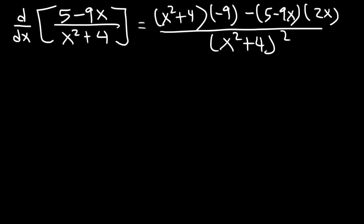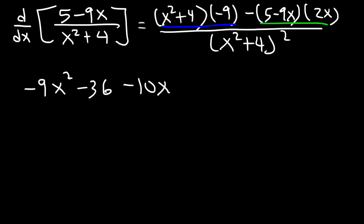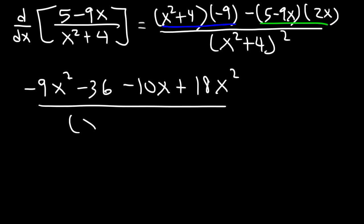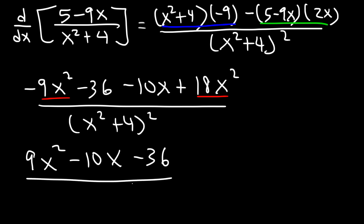Applying the quotient rule: g times f prime is x squared plus 4 times negative 9, minus f times g prime which is 5 minus 9x times 2x, all over x squared plus 4 squared. Distributing: negative 9 times x squared plus 4 gives negative 9x squared minus 36. Then negative 10x plus positive 18x squared. Combining like terms: negative 9x squared plus 18x squared is 9x squared, giving a final answer of 9x squared minus 10x minus 36 over x squared plus 4 squared.